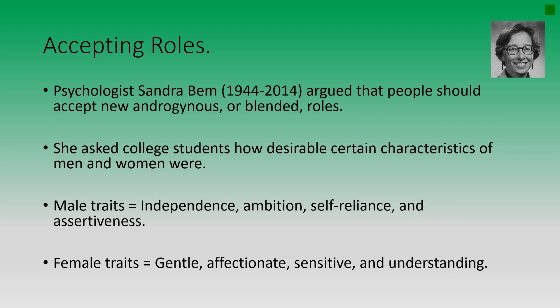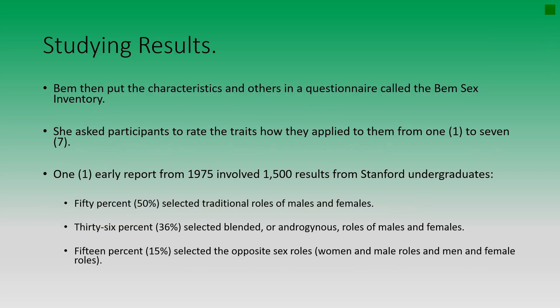Psychologist Sandra Bem argued that people should accept new androgynous, or blended, roles. She asked college students how desirable certain characteristics of men and women were. Male traits identified included independence, ambition, self-reliance, and assertiveness. Female traits identified included being gentle, affectionate, sensitive, and understanding. Bem compiled these characteristics into a questionnaire called the Bem Sex Role Inventory, asking participants to rate how each trait applied to them on a scale of one to seven — one being least likely, seven being most likely.